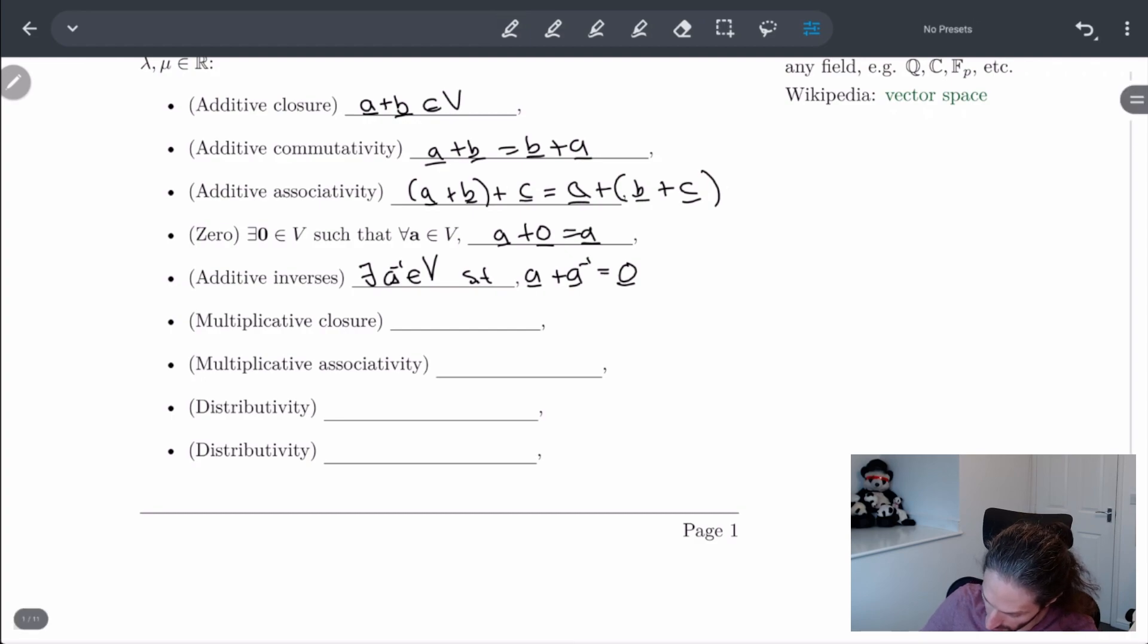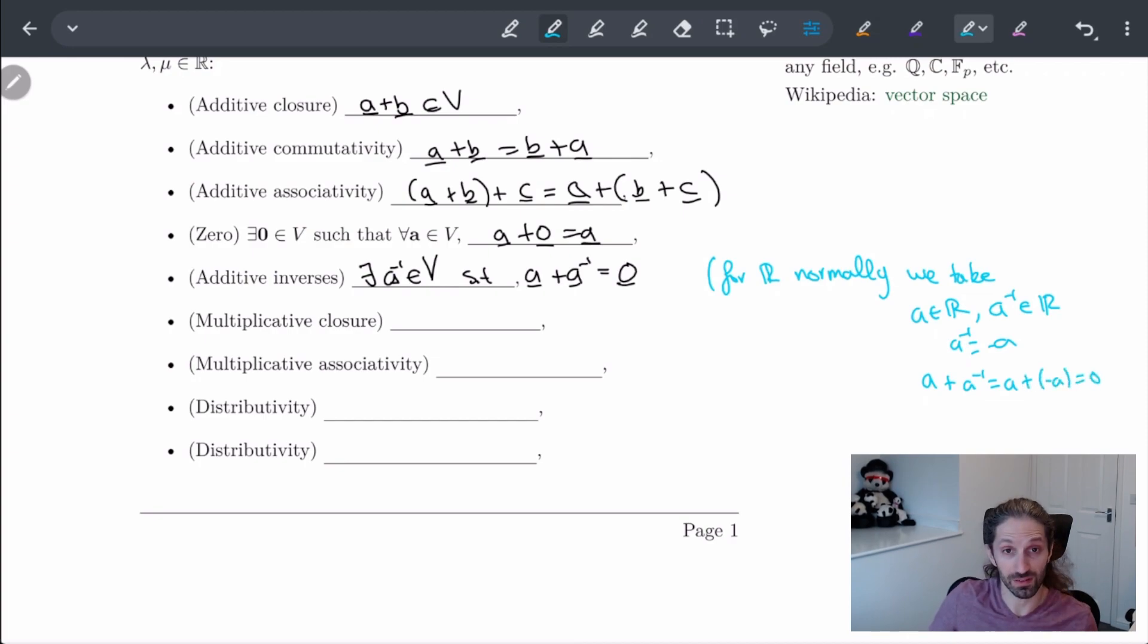So a little side note in this case for R, normally we take, like for when we just take some number in R, then A inverse in R is just, A inverse is just minus A. And the way to see this is because A plus A inverse, so A plus minus A is equal to zero.